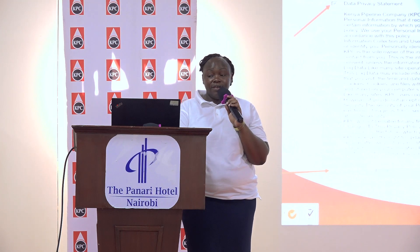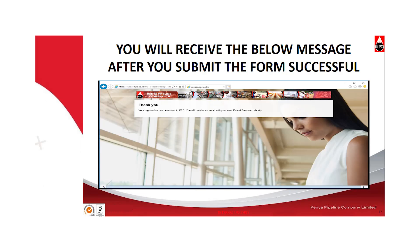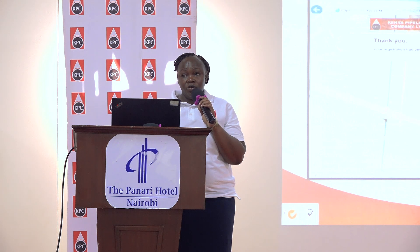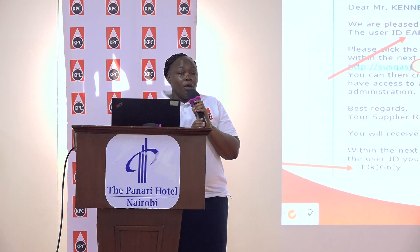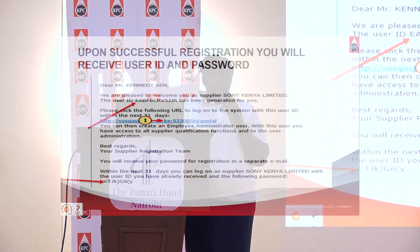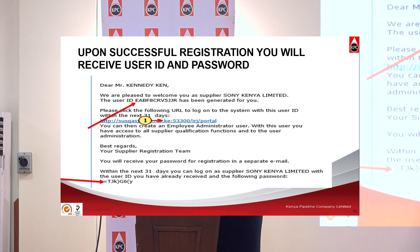Finally, on the form, we have the data privacy statement. Go through it, read it. Once you accept, select the checkbox and then click on send. Upon successful registration, you will receive a notification that your registration has been sent to KPC, and you will receive your user ID and password. If you do not receive this notification and instead receive error messages, go back to the top of the form, see what error you are getting — whether it is about your PIN or your email address — rectify the error and then send the form. The emails will come in two: the first will contain the user ID which is alphanumerical, and the second email will contain your password.